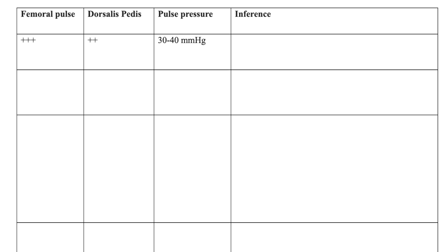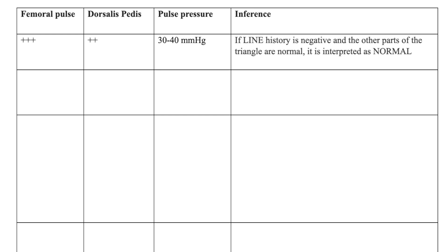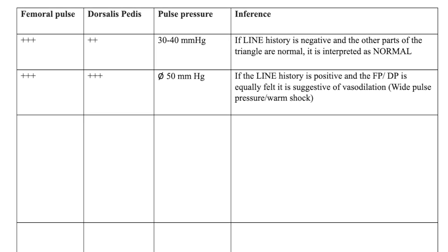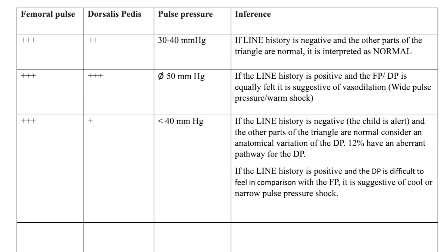If the femoral pulse is 3+ and the dorsalis pedis is 2+, and the LINE history is negative and the other parts of the triangle are normal, it is interpreted as normal. If the femoral is 3+ and the dorsalis pedis is equally felt at 3+, and the LINE history is positive, it is suggestive of vasodilation — wide pulse pressure or warm shock. If the femoral is easily felt at 3+ but the dorsalis pedis had to be searched and located, and the LINE history is negative, the child is alert, and the triangle is normal, consider a variation of the dorsalis pedis.